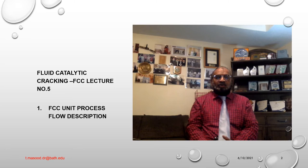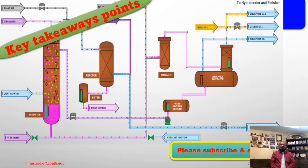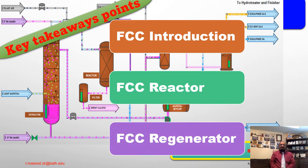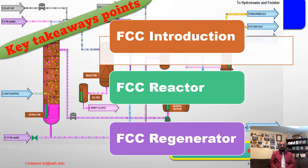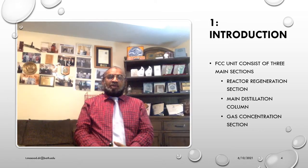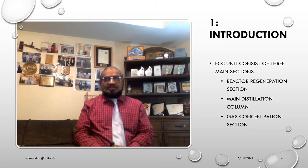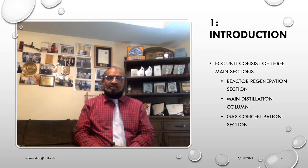Fluid Catalytic Cracking FCC unit, Lecture Number 5: process flow description. Key takeaway points from Lecture 5 include FCC unit introduction, FCC reactor, and FCC regenerator. The FCC unit is split up into three main sections: first, the reactor-regenerator section; second, the main column or distillation column section; and third, the gas concentration section.